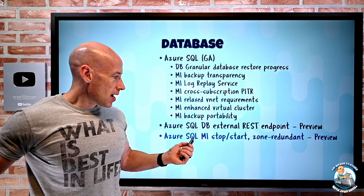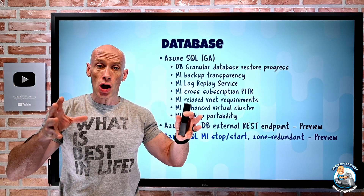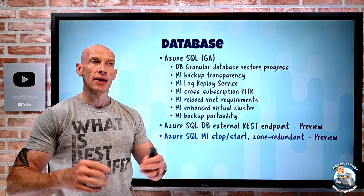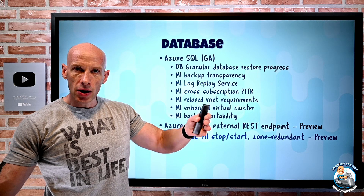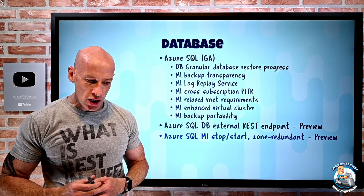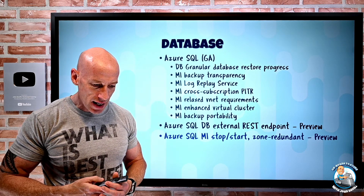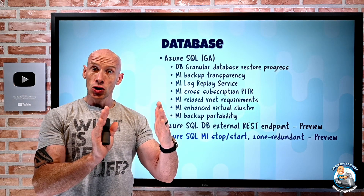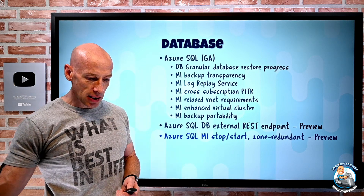For Azure SQL Managed Instance, you can now stop your instance — when stopped, you stop paying the compute charge, though you still pay for underlying storage and backups. You can then start it again. There are zone redundant options for Business Critical tier to distribute replicas over multiple availability zones for increased resiliency. There's a sub-30-minute creation time in a new subnet coming mid-December for General Purpose 8 vCores. There's also a Distributed Transaction Coordinator in preview, enabling distributed transactions where a single transaction spans multiple databases.